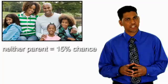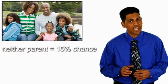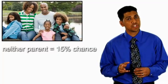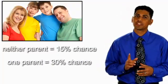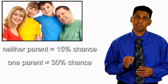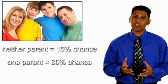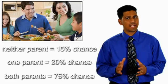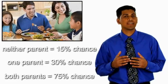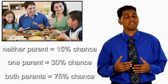If neither parent is allergic, there's only a 15% chance their child will become allergic. But if one parent is allergic, a child has a 30% chance of developing allergies. And if both parents have allergies, their child has a 75% chance of developing them.